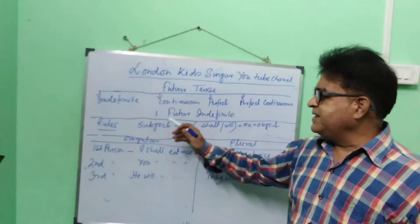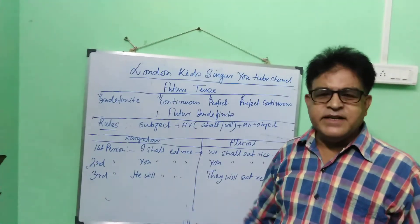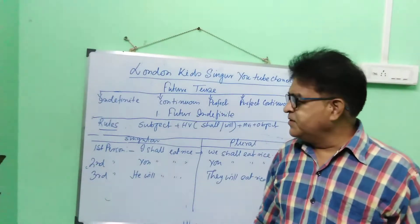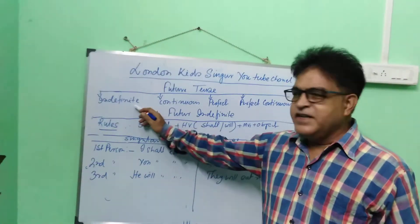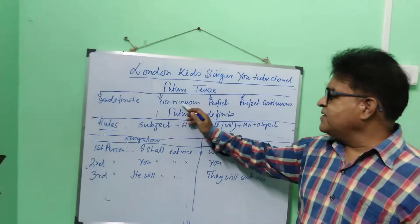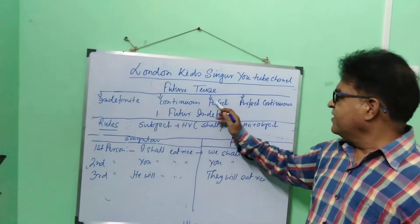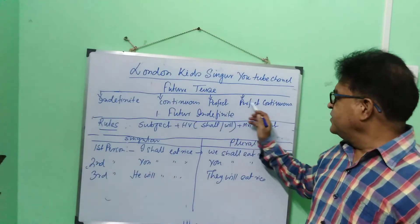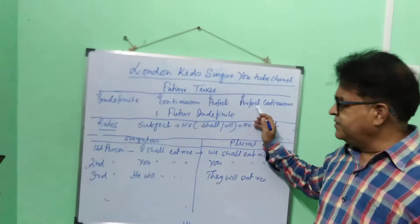Future tense is divided into four groups: Future Indefinite, Future Continuous, Future Perfect, and Future Perfect Continuous.